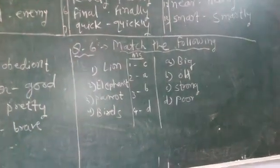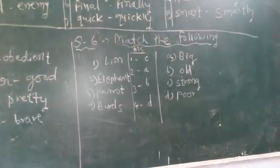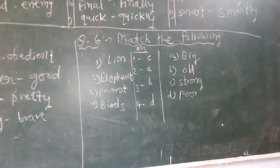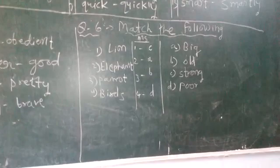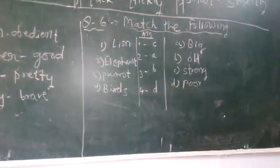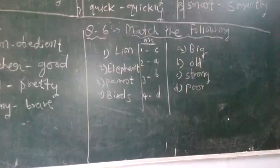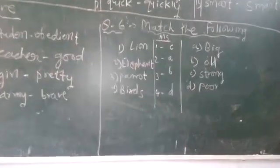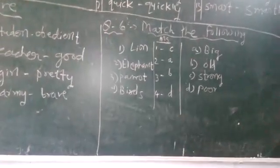Question number 6, match the following: lion goes with C, lion is strong. Elephant goes with A, elephant is big. Parrot goes with A, parrot is old, and birds go with war.